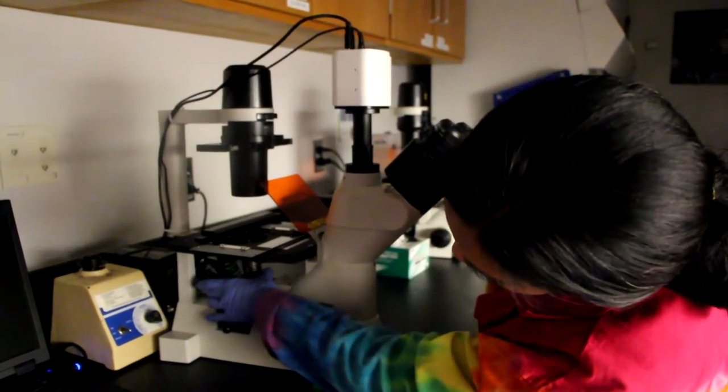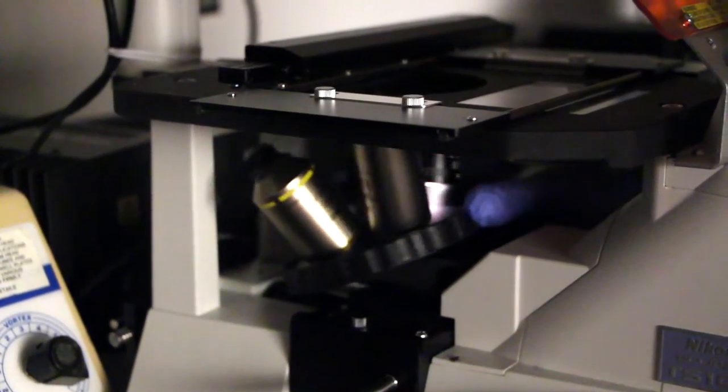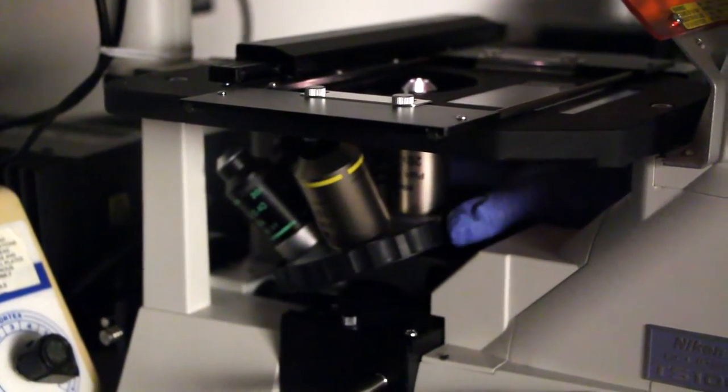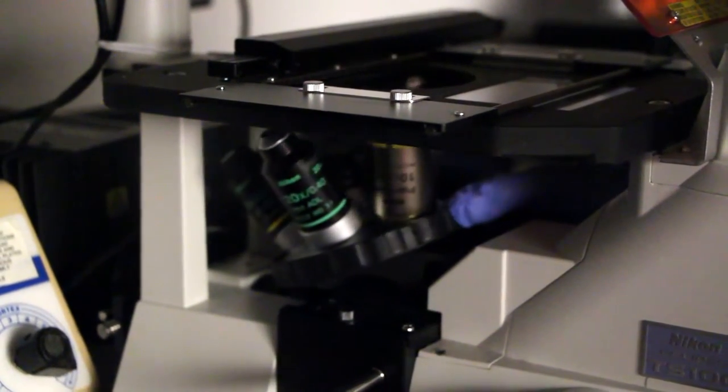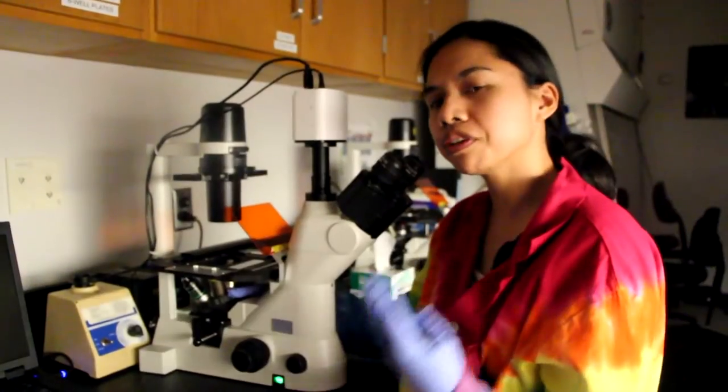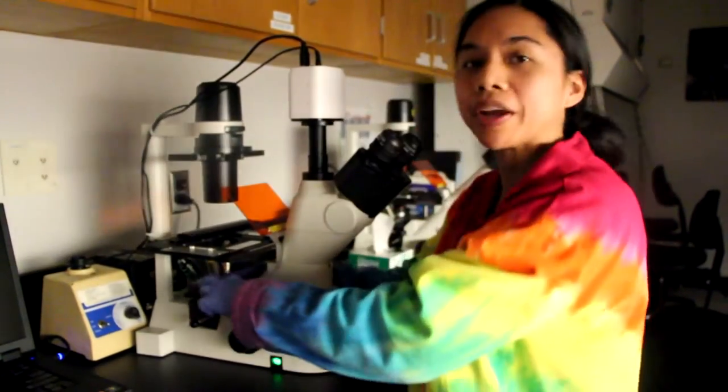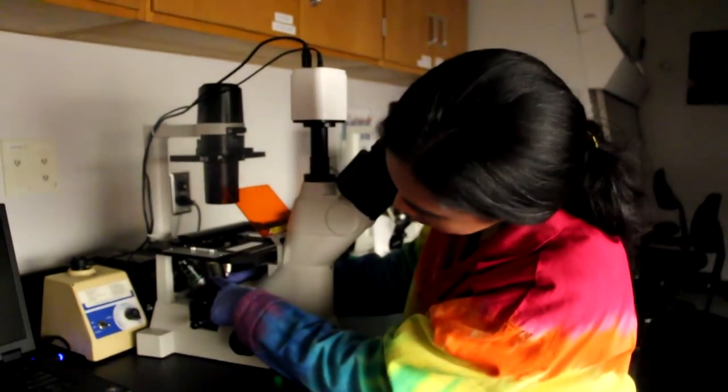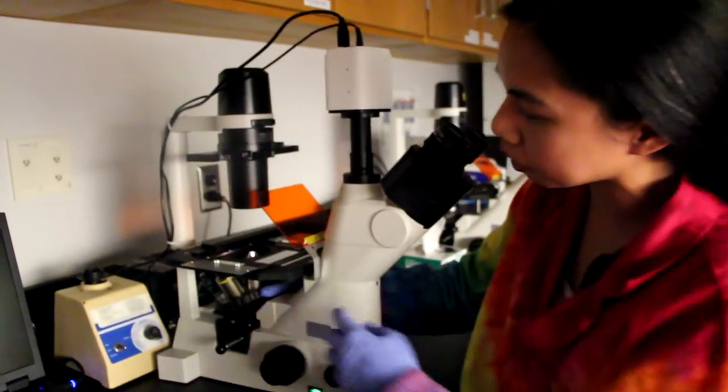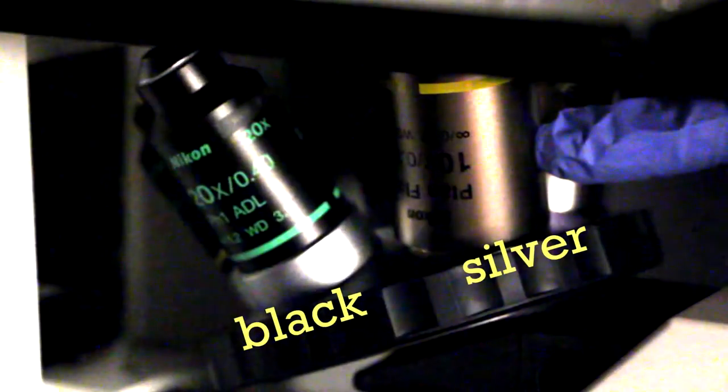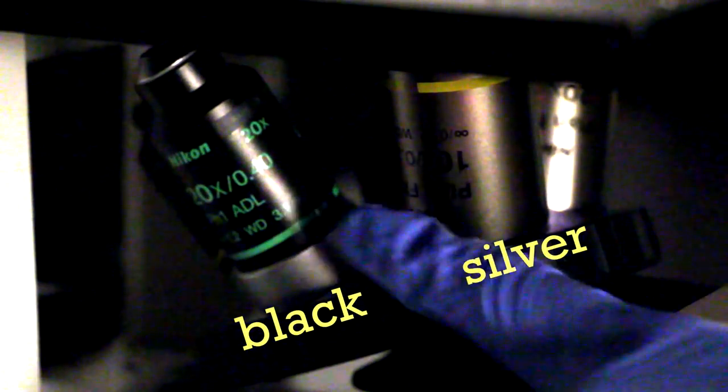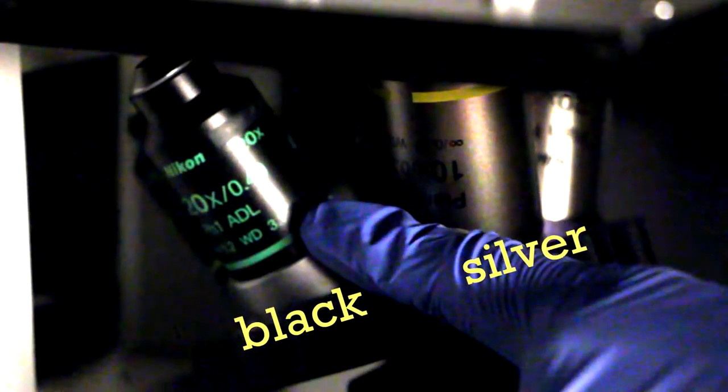And we can switch the objectives simply by rotating this little nose piece, it's called, down here. We have two different kinds of objectives on our nose piece, indicated by the color. So the silver objectives are optimized for fluorescence microscopy, while the black objectives are optimized for bright field and phase contrast microscopy.